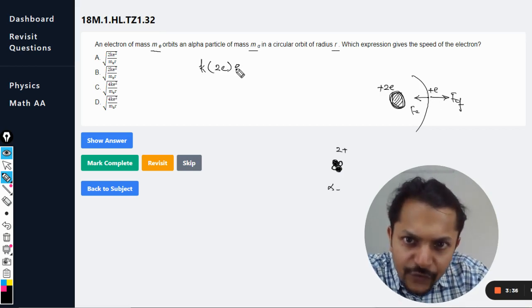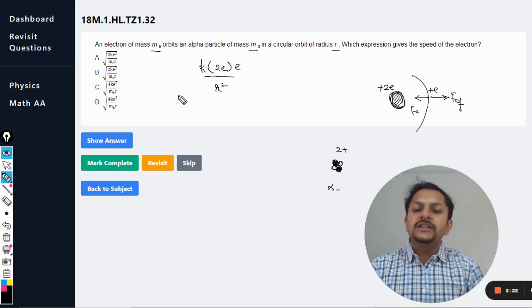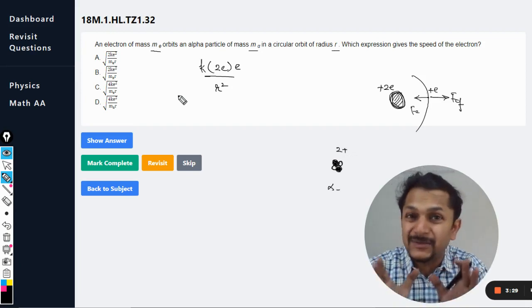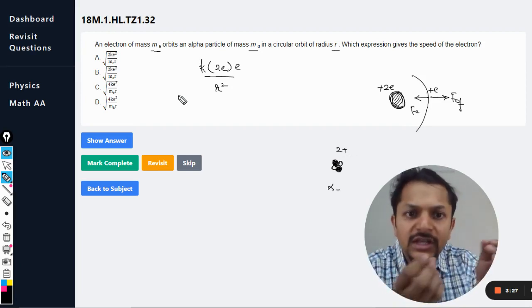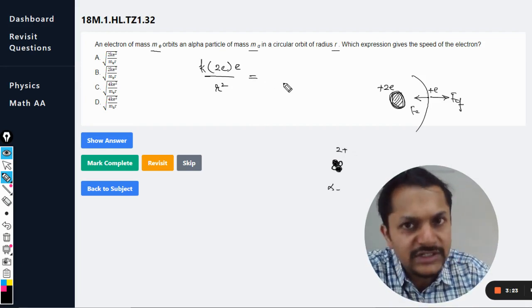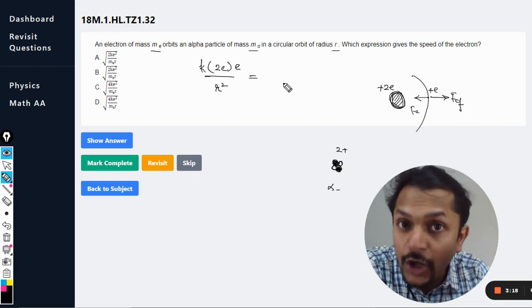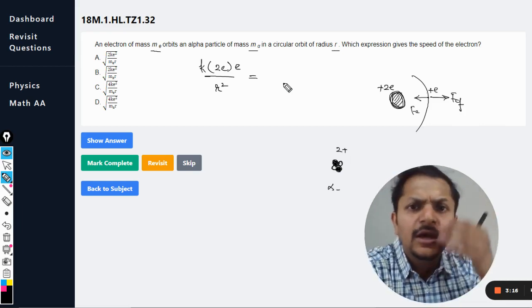Alpha particle is having the charge of 2e and the electron is having the charge of 1e. So the force will be this divided by the radius of the orbit square. Now this is the electrostatic force which would be experienced by the electron due to the alpha particle. Now this will be equal to the centripetal force.